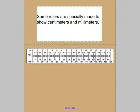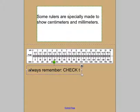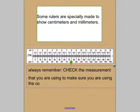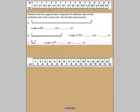Always remember, check the measurements that you are using to make sure you are using the correct side. That's a note from management. I want to take a look at this sheet on here. We're going to look at line segment AB and then line segment CD. The directions say, measure each line segment below using both the millimeter side and the centimeter side of our centimeter-millimeter ruler. And we're going to record both measurements.